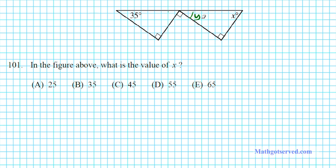Now, to figure out what angle y is, we know this is 90. We have to figure out the value of this angle, angle z. So using this triangle, we can find z first, and then find y using these two angles, and then ultimately find the value of x. Let's start off by finding z using the triangle angle sum theorem.